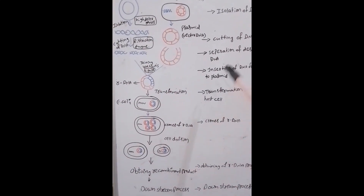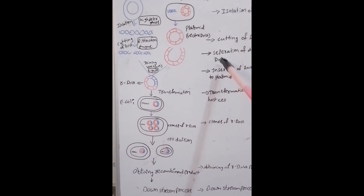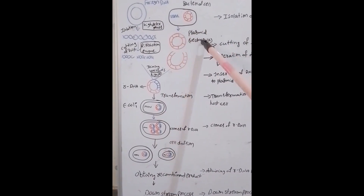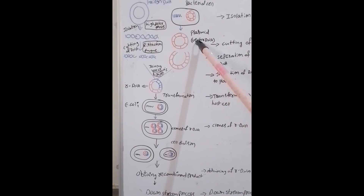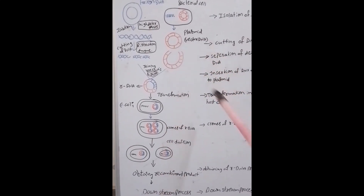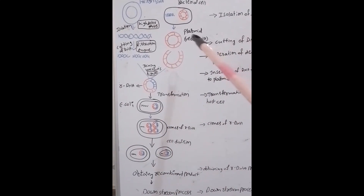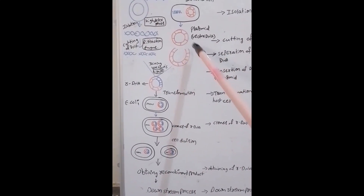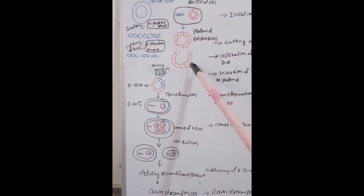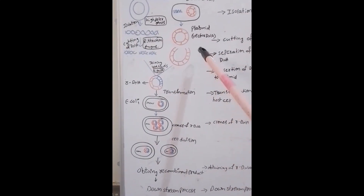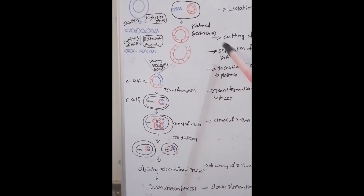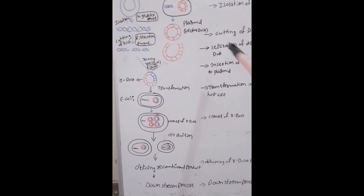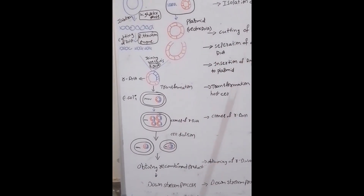Next, separation of desired DNA. Here, we select the bacterial cell and separate the desired DNA. This is the plasmid — a circular DNA molecule — also called vector DNA. Separation of desired DNA occurs through the process of electrophoresis.